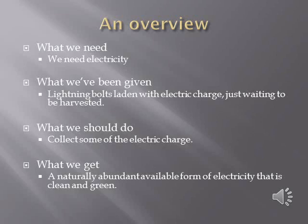An overview. What we need: we need electricity. What we've been given: lightning bolts laden with electric charge, just waiting to be harvested. What we should do: collect some of the electric charge. What we get: a naturally abundant, available form of electricity that is clean and green.